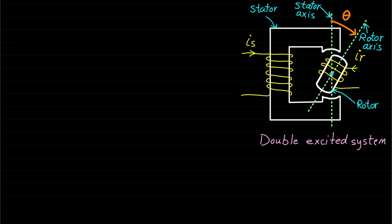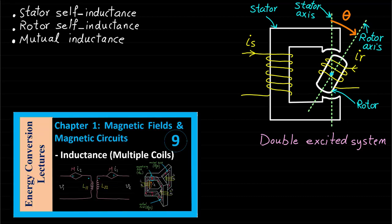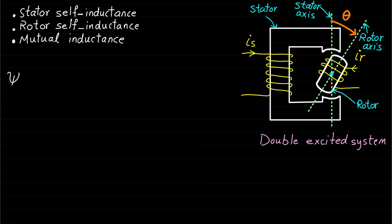These inductances are the stator self-inductance, rotor self-inductance, and the mutual inductance between the stator and rotor coils. Please review the self-inductance lecture as it has more details about these inductances. Basically, we need to recall the following two equations of the magnetic field linkages of the two coils' magnetic system.